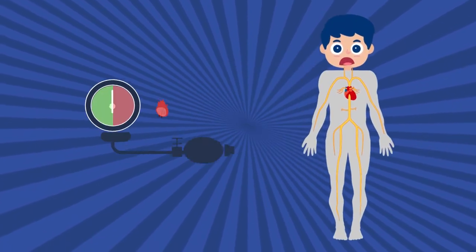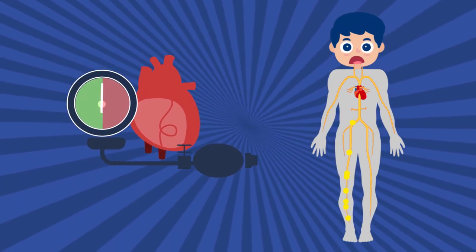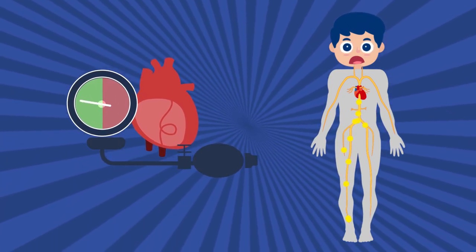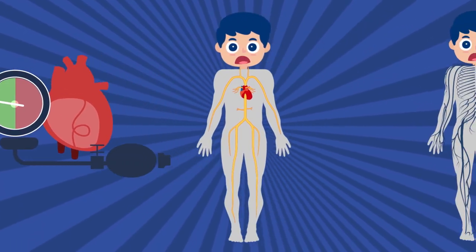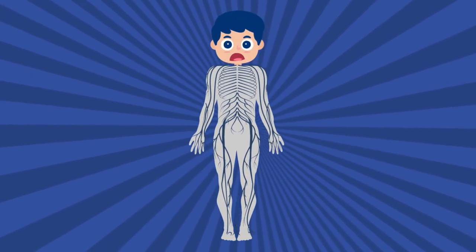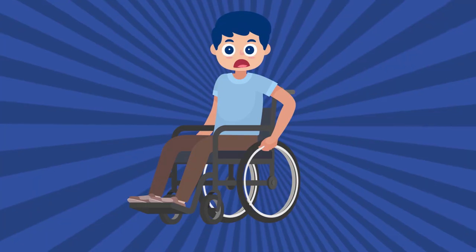If the venom affects your circulatory system, it can increase or decrease your blood pressure, making it either hard or really easy to gush out the toxins from your system. On the other hand, if the venom hits your nervous system, it can stop sending nerve signals to your muscles, which can cause paralysis.